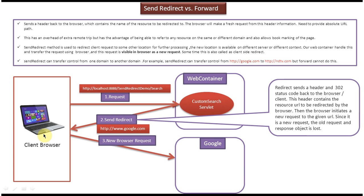The client gets the location header value — www.google.com — and makes a new request to the Google server. The Google server receives the request, processes it, and sends the response back to the client. You can clearly see that in this process the client browser is involved.